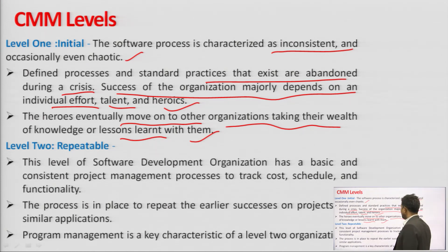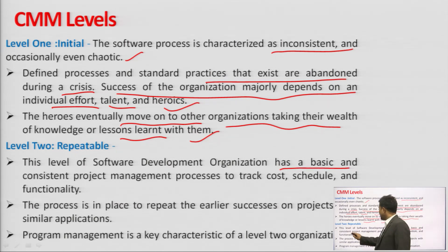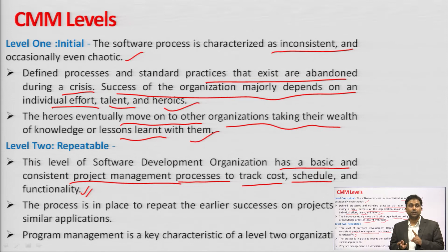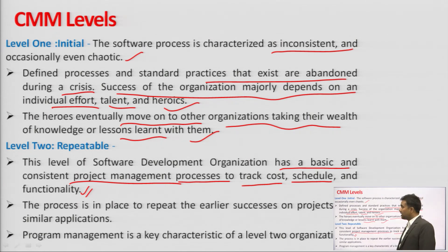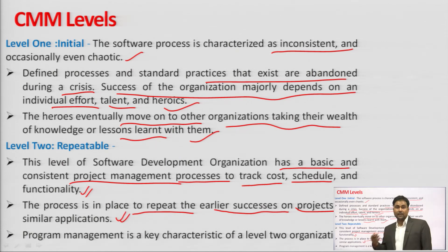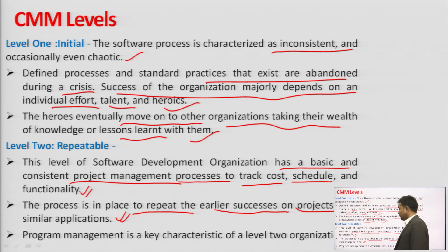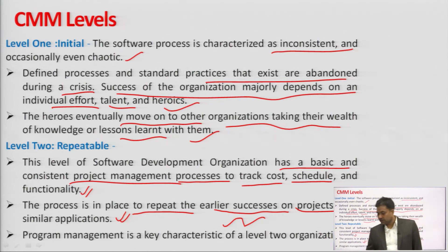Level 2 is Repeatable — the software development organization has basic and consistent project management. It tracks cost, schedule, and functionality. Cost is tracked to avoid over-budget situations, scheduling ensures timely delivery, and testing ensures all functionality works properly. The process is in place to repeat earlier success on projects with similar applications. Program management is the key characteristic of level 2.